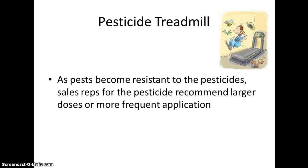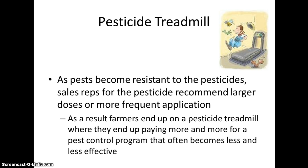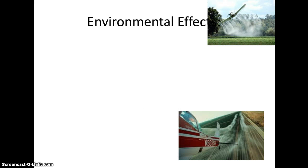As pests become resistant to pesticides, companies often recommend applying more. When you apply more, pests become resistant even faster, making pesticide use less and less effective over time. This would be an example of a positive feedback loop.